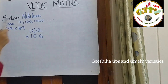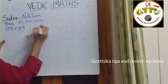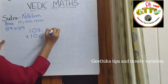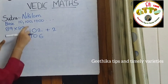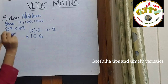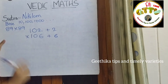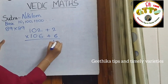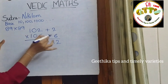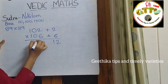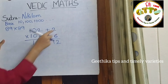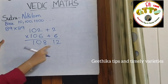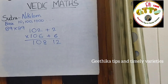102 into 106 — both are greater than 100. So, 102 minus 100 is plus 2, and 106 minus 100 is plus 6. We put a plus sign because they are greater than 100. Now, 6 twos are 12. And 102 plus 6 is 108 — or 106 plus 2 is 108. So, 102 into 106 is 10,812.